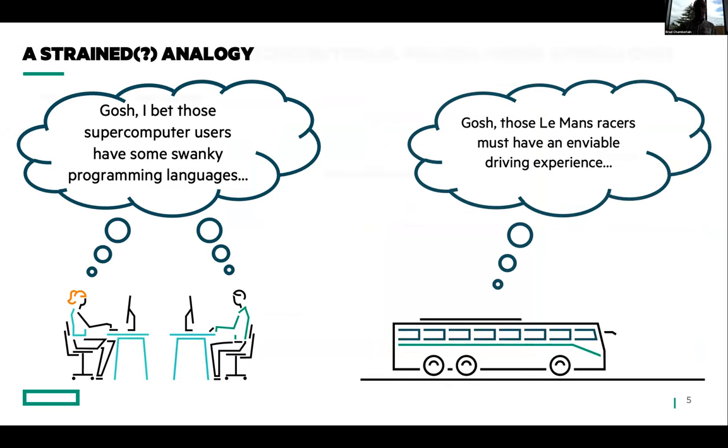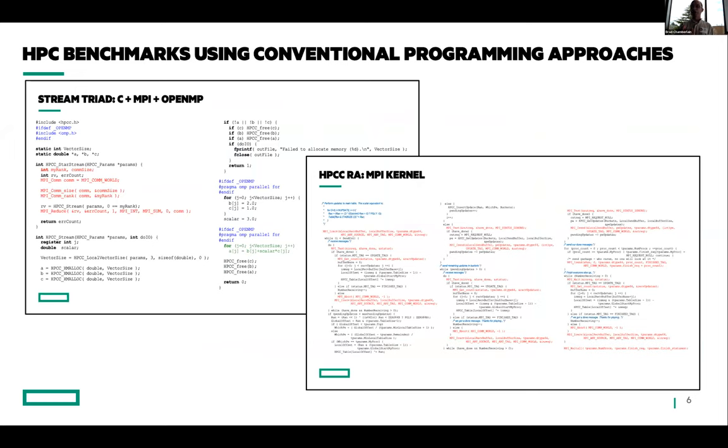In the case of HPC, what that means is that even for fairly simple computations like these two benchmarks here that I don't have time to teach you about—stream triad and HPCC random access—you have to write a lot of code to do what is conceptually a fairly simple operation. That's because we build these very fast machines, we build sort of the minimal models to target them, and then as a community we don't do much above that, or at least traditionally we haven't.